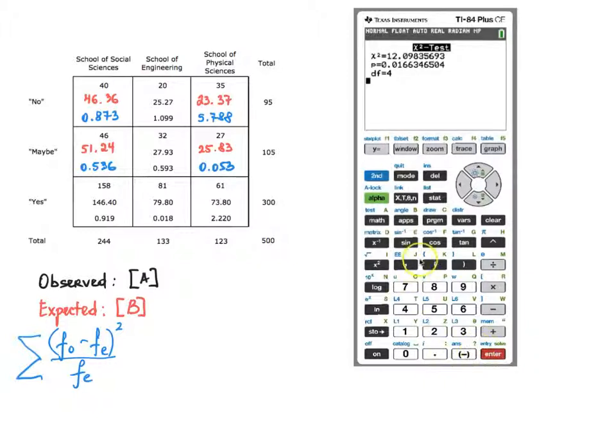Now let's see how we can see the expected values. You need to go back to matrices. Second, x to the negative first power will take you to that menu. Scroll down to matrix B, press enter, and again press enter one more time to see all the expected values that were produced as the result of the chi-square test. So instead of computing the expected values manually by multiplying the total for the column by the total for the row and then dividing by the total for the table, which you're welcome to do, you could just run the chi-square test to get all of those computed for you at once and present it to you in a 3 by 3 matrix.